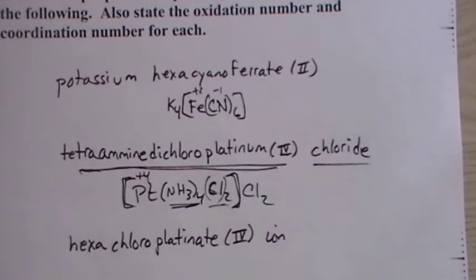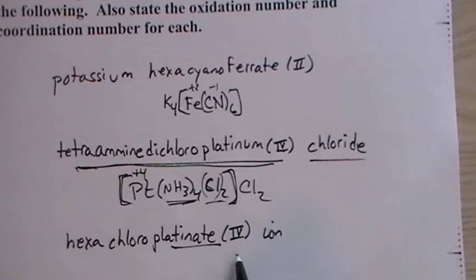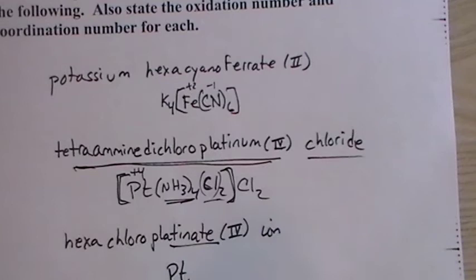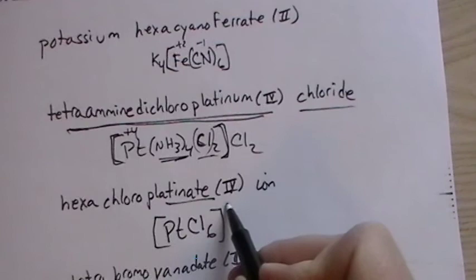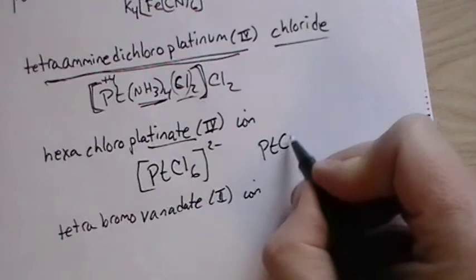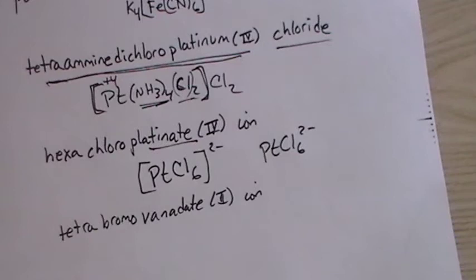Okay, hexachloroplatinate ion. So since it's platinate, we know that it should be a negative ion when we're done. Let's see if that's right. So platinum, hexachloro, so that's six chlorine. It's a four here, plus four, and then there's six chlorine, each one minus one, so this should be a minus two ion. And put the square brackets around it. Sometimes you'll see it like this.